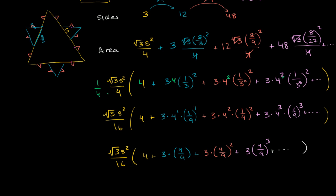In the last video, we got as far as figuring out that the area of this Koch snowflake, this thing that has an infinite perimeter, can be expressed as this infinite sum right over here. So our job in this video is to try to simplify this and hopefully get a finite value.